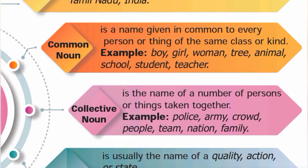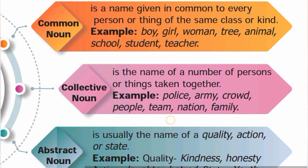Collective noun is the name of a number of persons or things taken together as one group or collection. For example, police, army, and crowd are collective nouns — they represent a collection of persons or things taken together.